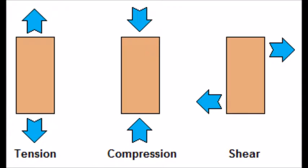First, we're going to talk about compression. It's the push of the rock towards the center, and some form new metamorphic structures. Tension is pulling apart — pieces of rocks can also slip away and fracture, depositing minerals into structures. Shear is sliding past the two rocks.